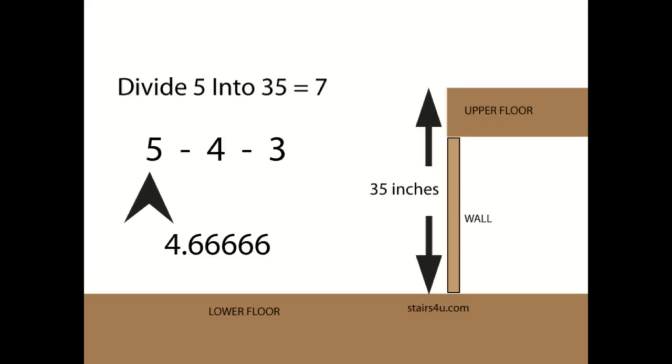However, we're going to double check and divide 4 into 35. It doesn't hurt to try multiple numbers—it gives us more options. But if we divide 4 into 35, we get 8.75, which is unacceptable for most building departments and building codes.